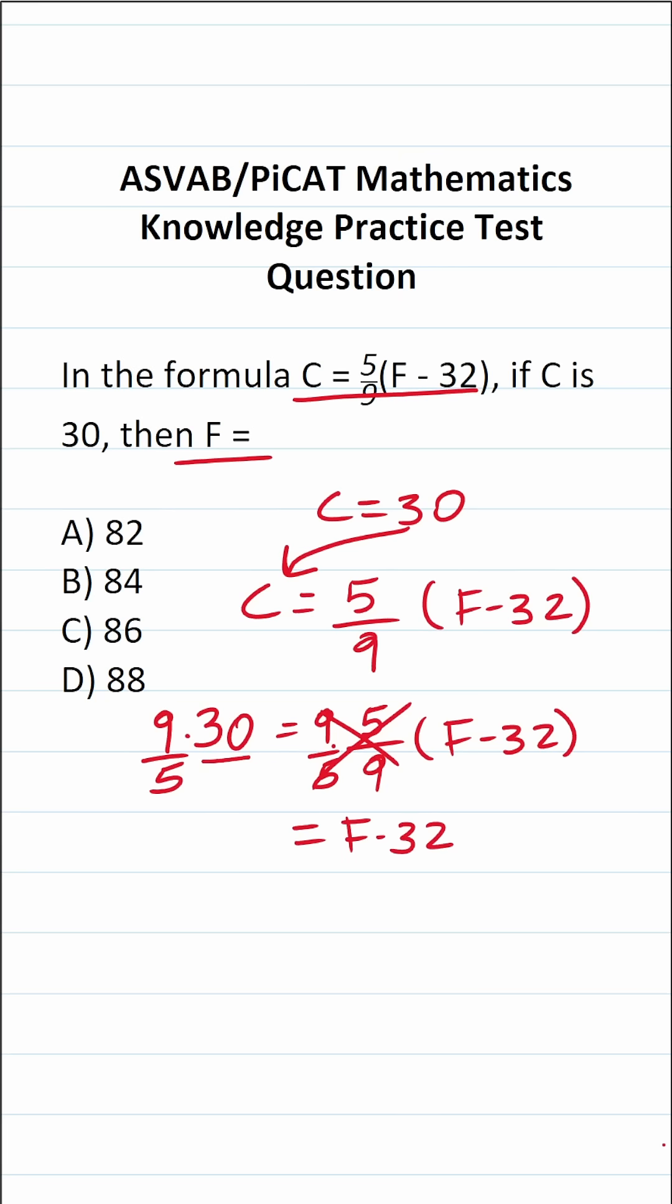Let's go ahead and simplify this. We have 9 over 5 times 30. I could write 30 as a fraction by placing it over 1. In doing so, this enables me to cross-reduce. More specifically, I can say 5 goes into 5 one time, 5 goes into 30 six times. This is 9 over 1, which is 9, times 6 over 1, which is 6. 9 times 6 is 54.